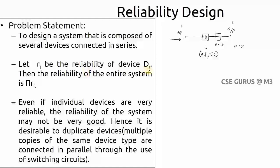Let R_i be the reliability of device D_i. The reliability of the entire system is the product of all R_i values. For example, if device D1 has reliability 0.8 and D2 has reliability 0.7, the total reliability is R1 × R2 = 0.56.